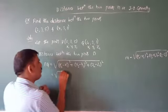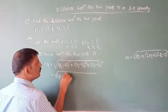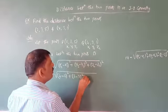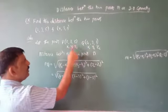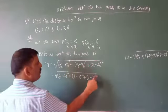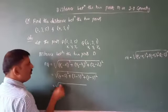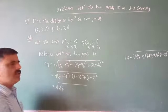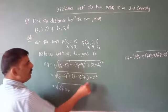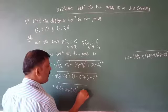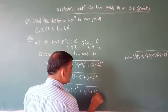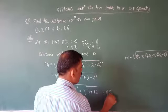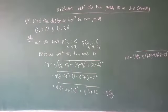PQ = √((4−2)² + (3−3)² + (1−5)²) = √(2² + 0² + (−4)²) = √(4 + 0 + 16) = √20. So the distance between the two points is √20.